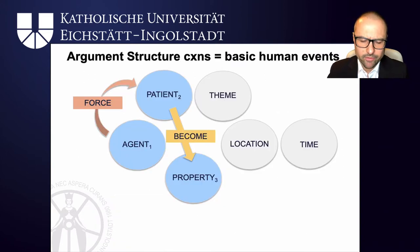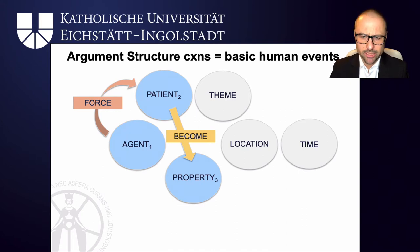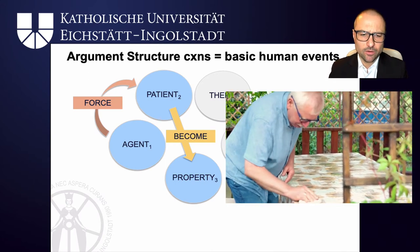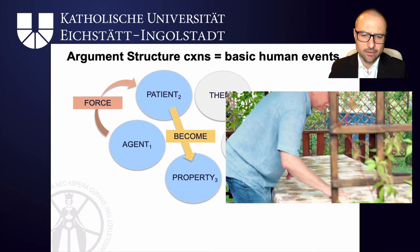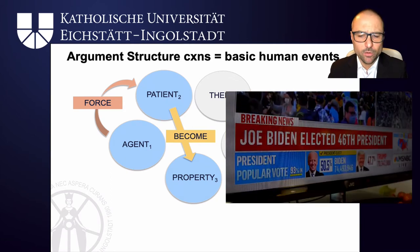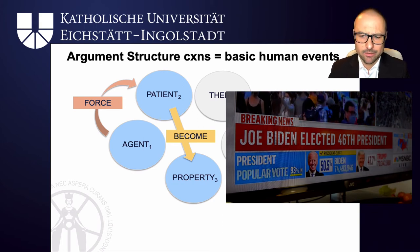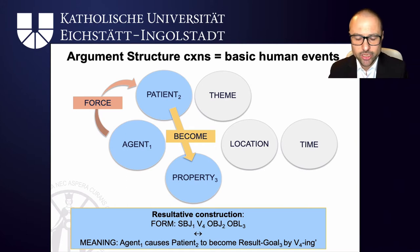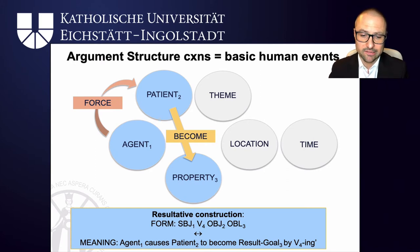The semantics of the resultative construction involves an agent that emits force onto a patient, which consequently becomes a new property. By kissing him, she kissed him unconscious. He wiped the table clean — he wipes, puts force onto the table, and consequently the table becomes clean. Or, if you use more abstract force, you elect someone and they become president: you elected them president. The formal pole with subject, verb, object, and oblique slot allows you to express this resultative relationship — a basic human scene you have perceived in many instances and therefore generalised to this abstract pattern.